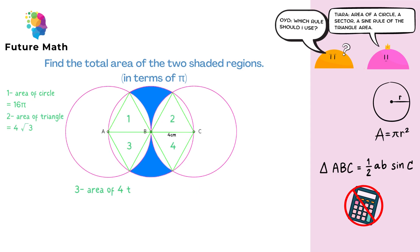Third step is to multiply the area of one triangle by 4, which is 4 times 4 root 3. And this comes out as 16 root 3.